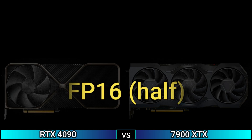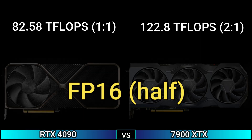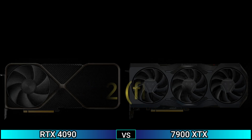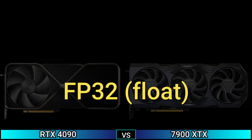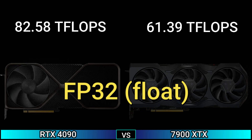FP16 half: 82.58 TFLOPS (1:1) and 122.8 TFLOPS (2:1). FP32 float: 82.58 TFLOPS and 61.39 TFLOPS.